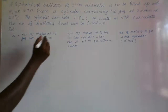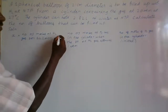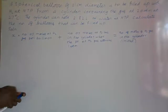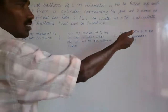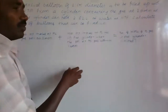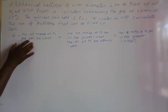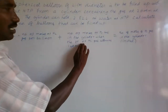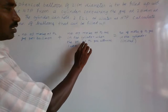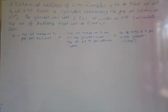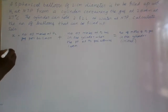We can say: the sum of moles in the balloons plus the moles remaining in the cylinder when pressure is one atmosphere equals the initial moles in the cylinder. Initially we have a certain number of moles; part is utilized for filling balloons, and part remains in the cylinder when the pressure of hydrogen gas in the cylinder is one atmosphere.